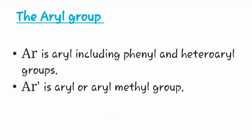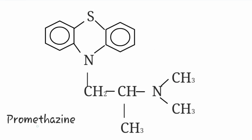AR is aryl, including phenyl and heteroaryl groups. AR' is also an aryl or aryl methyl group. Sometimes the two aromatic rings are bridged, which constitutes tricyclic ring derivatives. An example of this is promethazine.